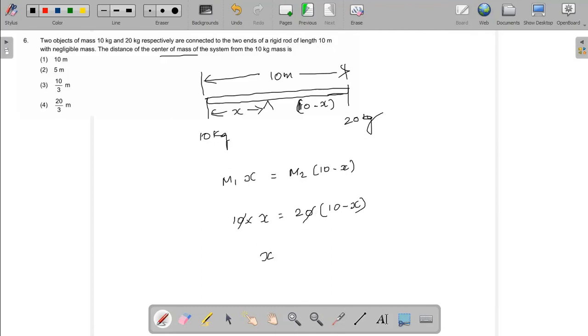10x equals 20(10 minus x). So we get 10x equals 20 minus 2x. From that, 3x equals 20, so x equals 20 by 3. 20 by 3 is the correct answer. Very simple question.